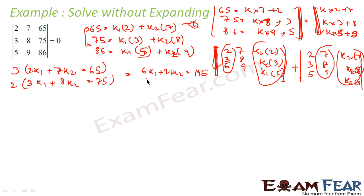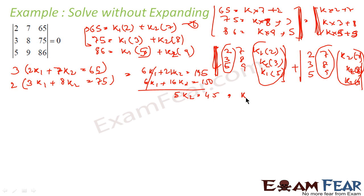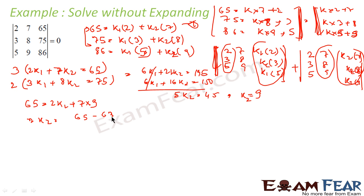We get 6k1 + 16k2 = 150. Subtracting, 5k2 = 45, so k2 = 9. Substituting back: 65 = 2k1 + 7·9, so 2k1 = 65 − 63 = 2, giving k1 = 1. So k1 = 1 and k2 = 9.